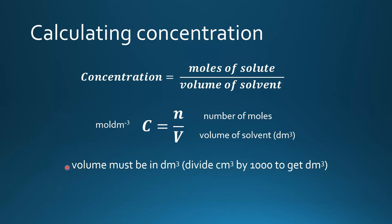Volume must be in decimeters cubed. To convert from centimeters cubed to decimeters cubed, you divide centimeters cubed by 1000 to get decimeters cubed.